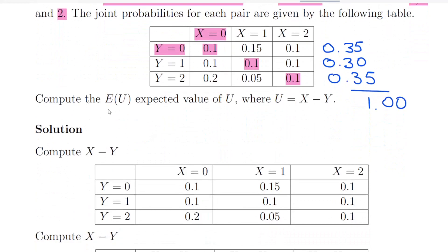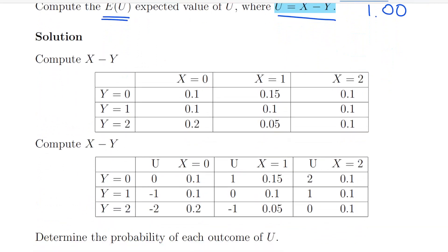What we have to do here is compute the expected value of U, where U is the difference between X and Y, X minus Y to be specific. Now what we're going to do is go through the table and count out for each of the cells what would be the value of U and what would be the corresponding probability. So what we're going to do is just count X minus Y.